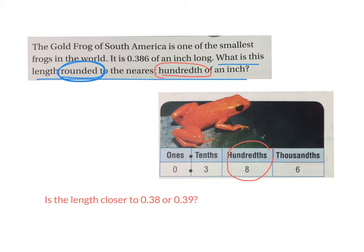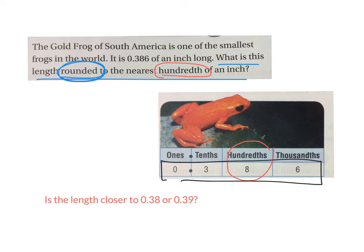What are we talking about when we talk about rounding? We're finding about or approximately how big that number is. Sometimes we don't want to be too precise — we just want to know approximately how big that number is. So it's asking us: if we know the tree frog is 0.386, that's the exact amount, but we don't need to know the thousandths. We just want to find out — is the length closer to 38 hundredths or 39 hundredths?